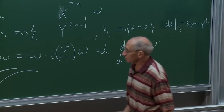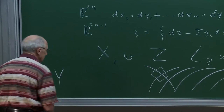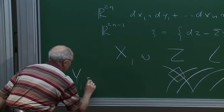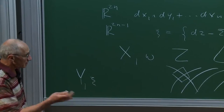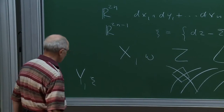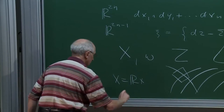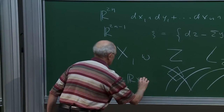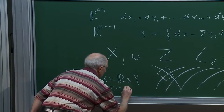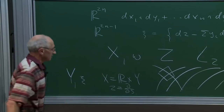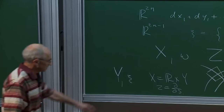Conversely, starting from any contact manifold with a contact structure, you can get a corresponding symplectic manifold called the symplectization. In the case when the contact structure is co-orientable, this symplectic manifold is just R cross Y, and the Liouville vector field z is just d/ds, where s is the coordinate in the R factor.